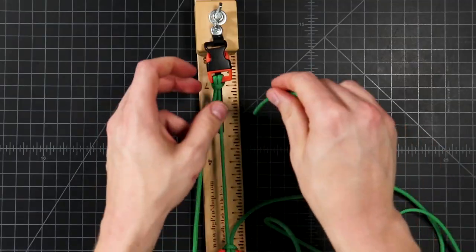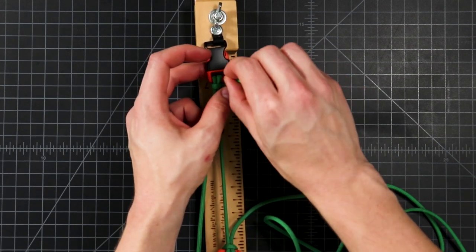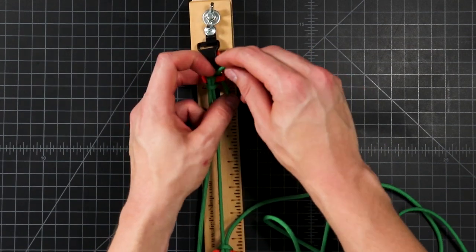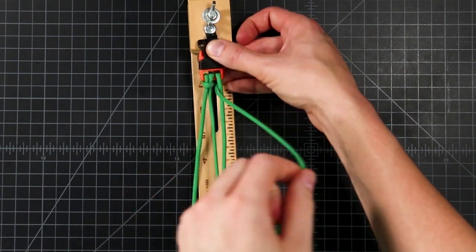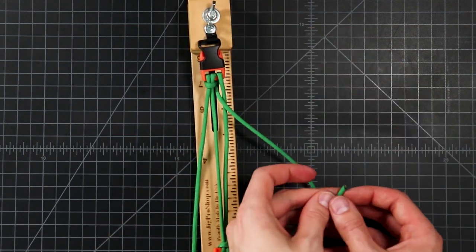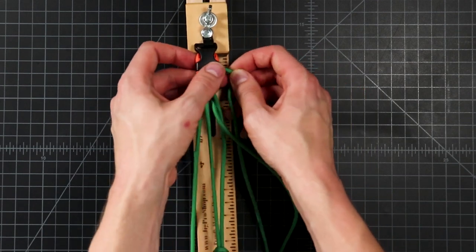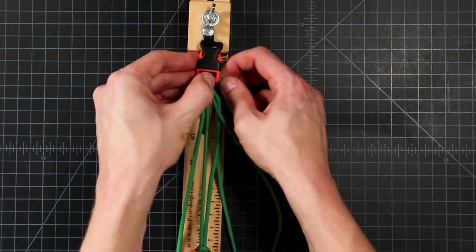Now we'll do the same with the right side. Down through the top. Coming up in the middle. Over the top of that cord. Up through the bottom.